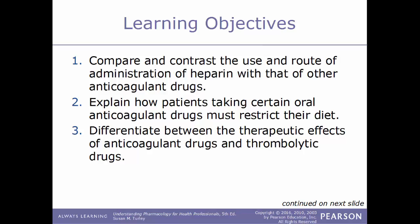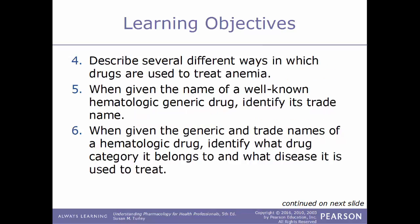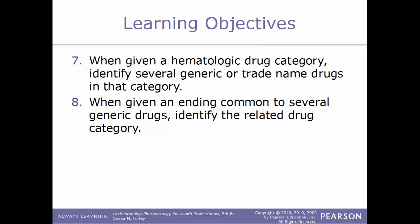Differentiate between therapeutic effects of anticoagulant drugs and thrombolytic drugs. Describe several different ways in which drugs are used to treat anemia. When given the name of a well-known hematologic generic drug, identify the trade name. When given the generic and trade name of a hematologic drug, identify what drug category it belongs to and what disease it would be used to treat. When given the hematologic drug category, identify several generic and trade names found in that category.